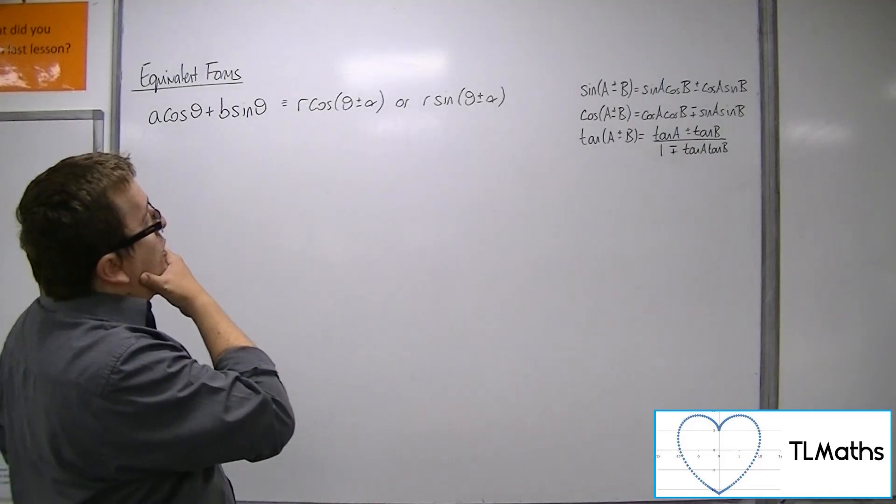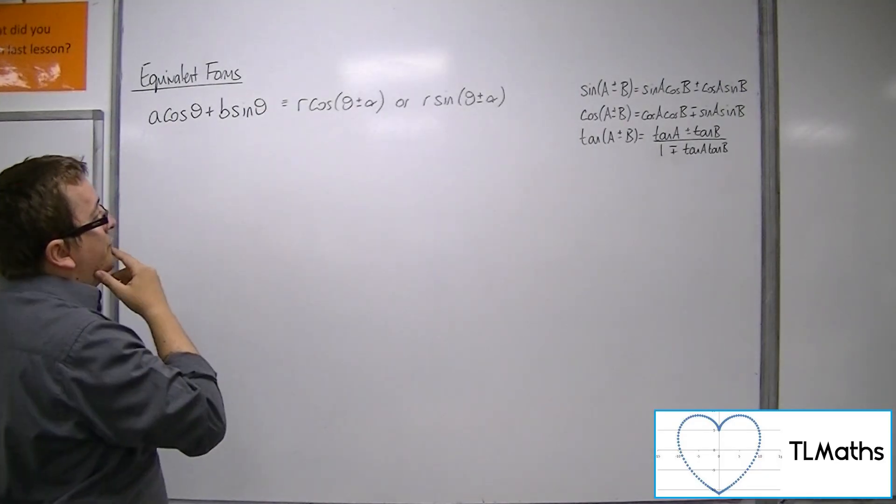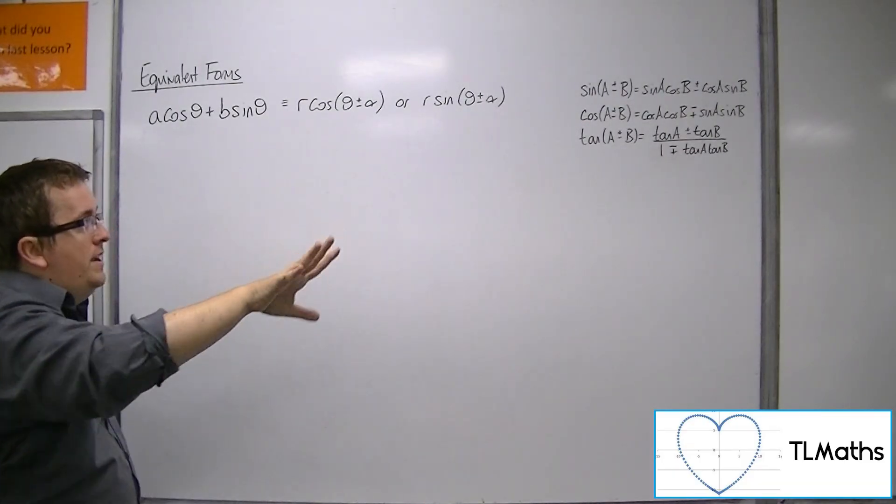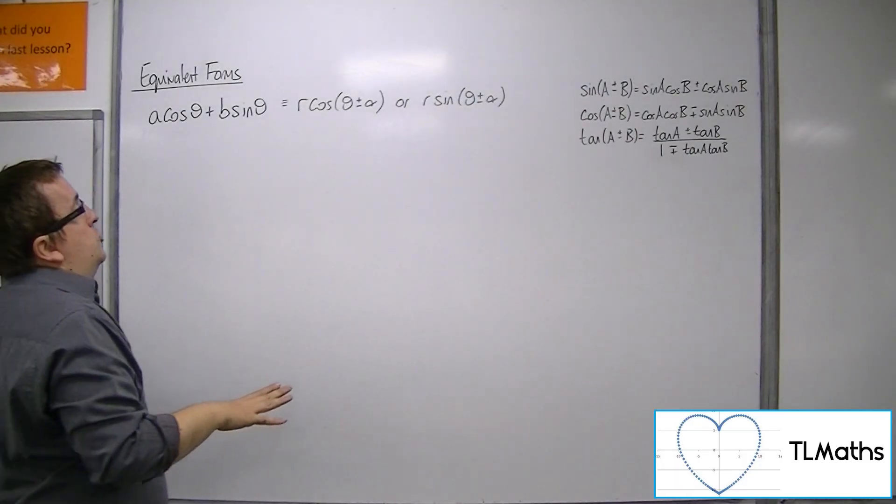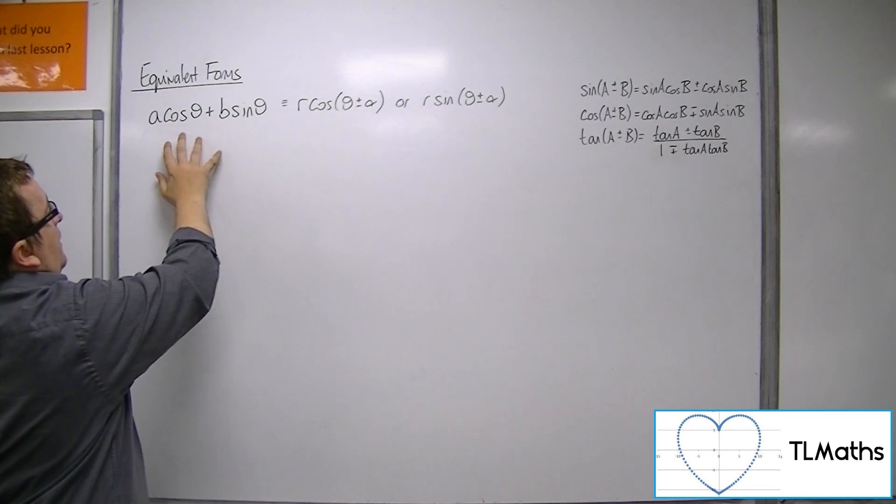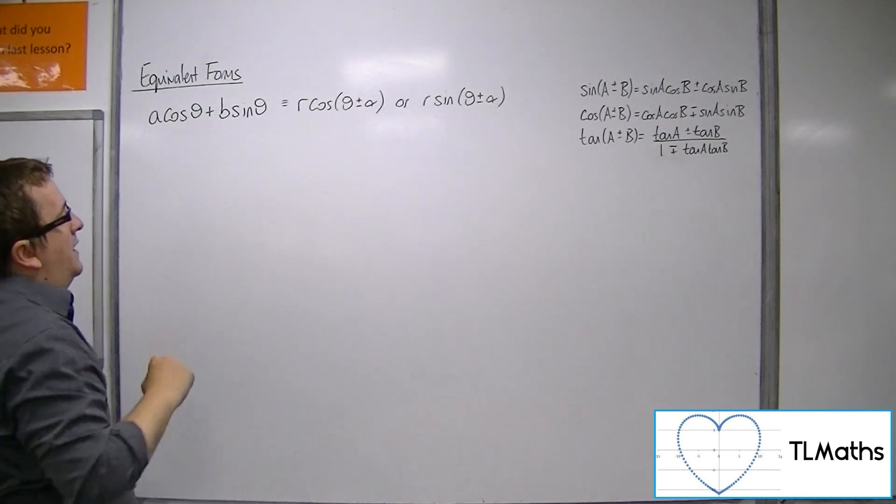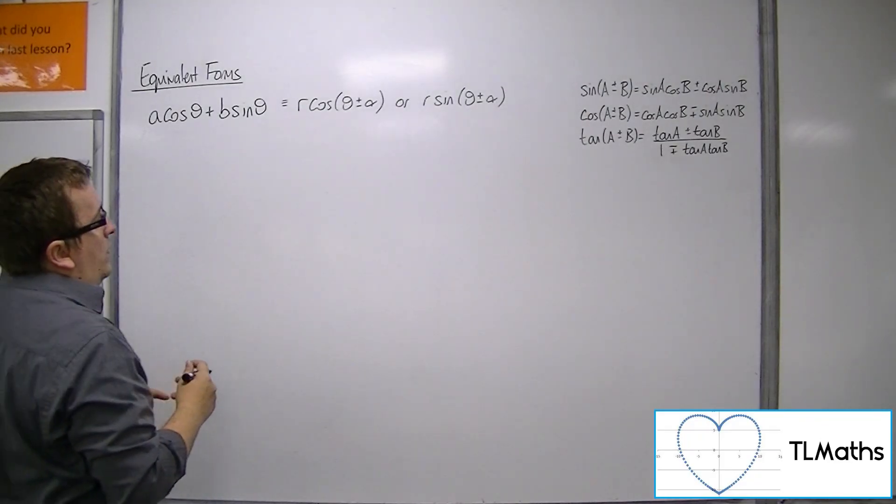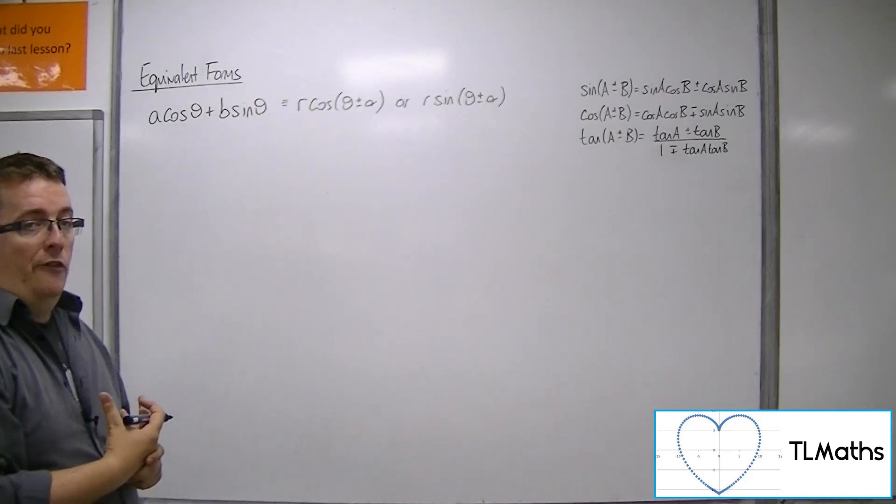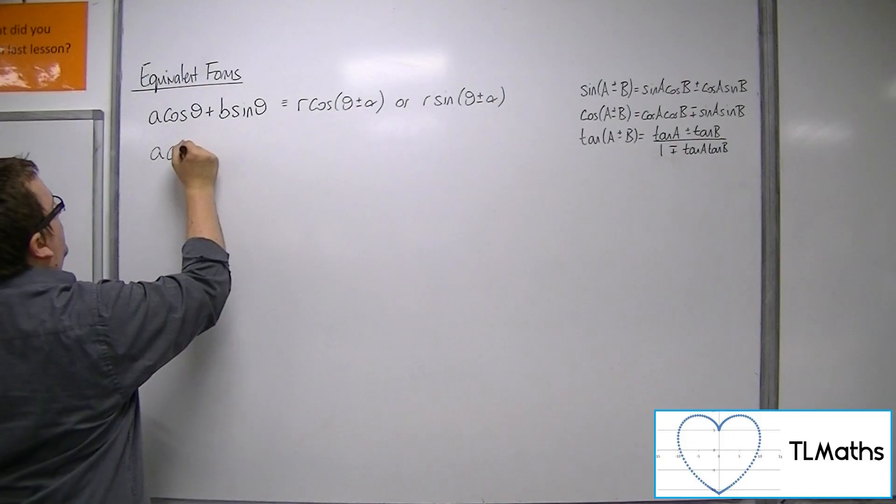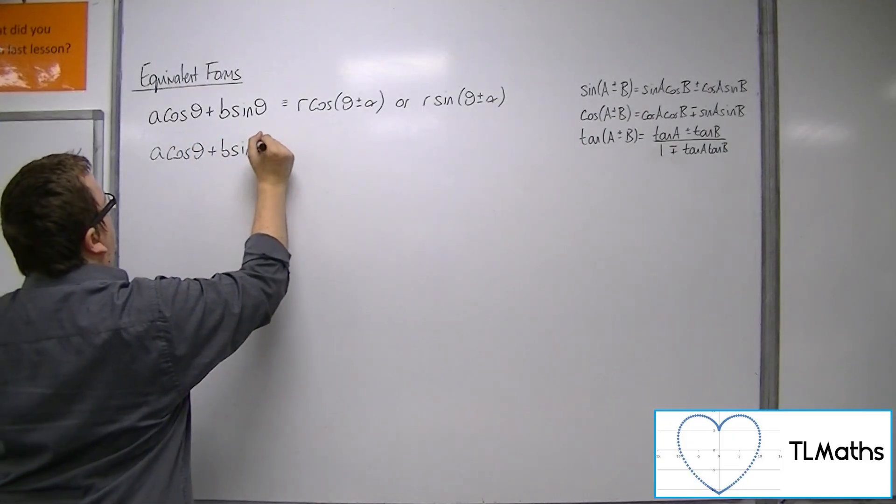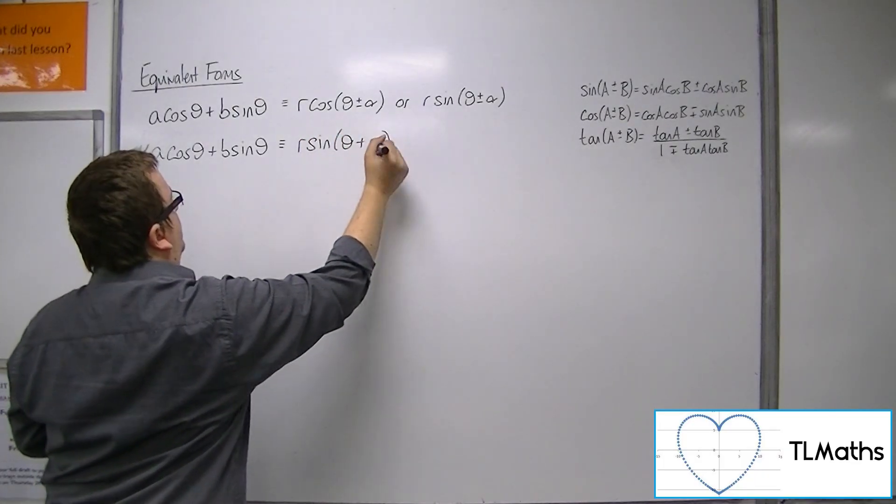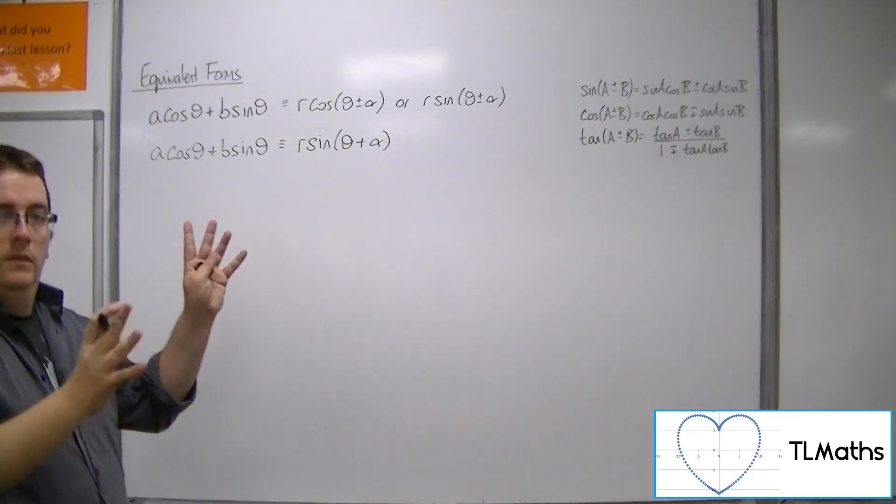And so what we want to do is we want to show that this is true. Now, what I'm going to do is I'm going to work with just one of these. You could try them all out yourself, if you like, to show that they all can be written in this format. Well, I can get a specific A, I can find what this r and alpha would be. So what I'm going to run with is I'm going to use r sine theta plus alpha. So I'm going to say that a cos theta plus b sine theta can be written as r sine theta plus alpha. I'm just going to go through this one version of it.